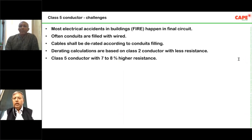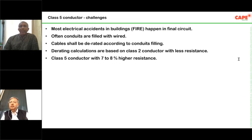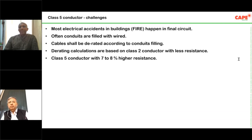Normally, Class 2 conductors are used. In earlier days — about 20 to 25 years ago — people used aluminium conductors for house wiring. Now most standards have switched to copper. Generally, up to 10mm² everybody uses copper; above 10mm² people may still use aluminium.